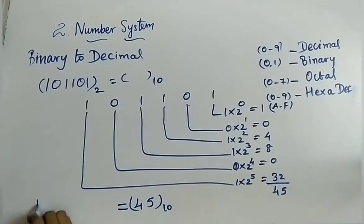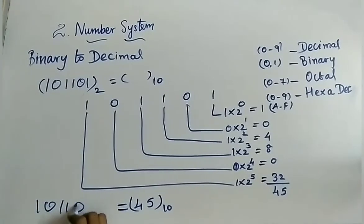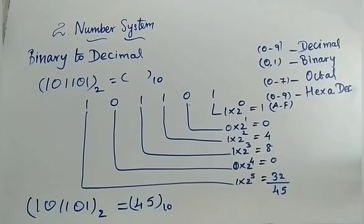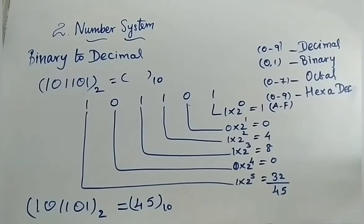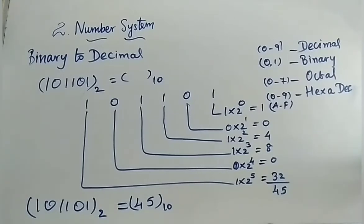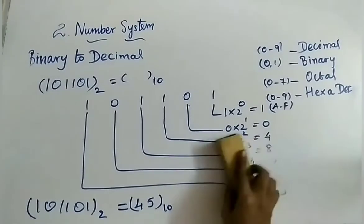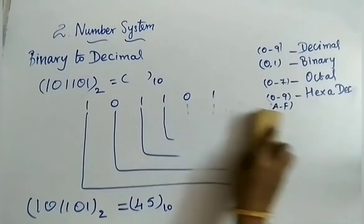Don't forget to mention the base — if the base is not written, the full problem is considered wrong. So for binary to decimal, you perform multiplication using 2 to the power of zero up through however many digits you have.